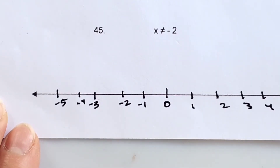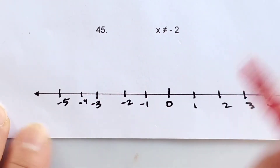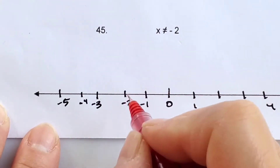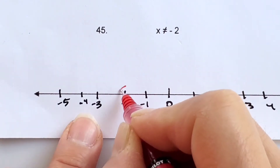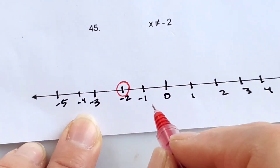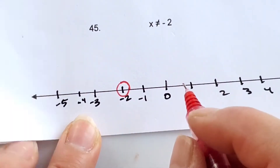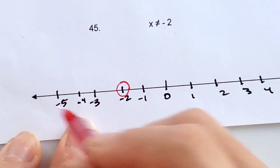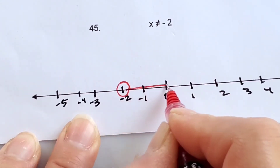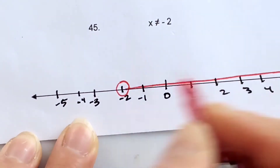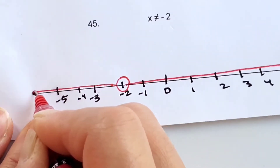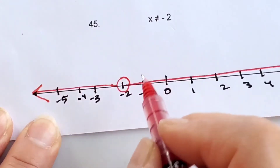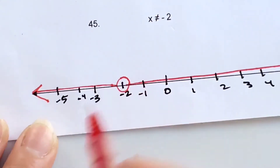Number 45: x does not equal negative 2. Find your negative 2 — x cannot equal negative 2, so you're going to have an open point. But it equals everything else on the number line, both negative and positive. So your arrows go to the right and also to the left of your open point, but it cannot equal negative 2, so that needs to stay open.